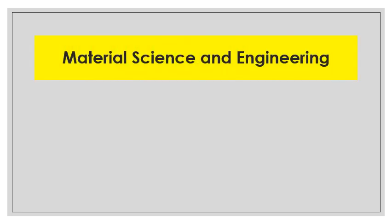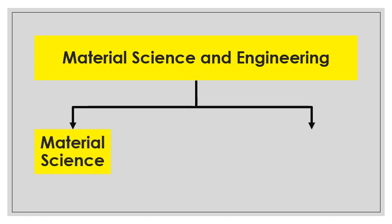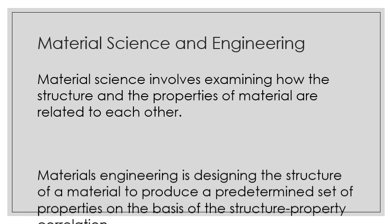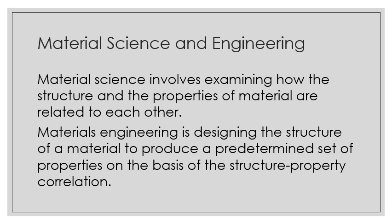Material science and engineering can be divided into two aspects: material science and material engineering. When we say material science, it involves examining how the structure and the properties of a material are related to each other. On the other hand, materials engineering is designing the structure of a material to produce a predetermined set of properties on the basis of the structure-property correlation. Sa material science, pag-aaralan mo lang at oobserbahan mo yung pre-existing materials. Pero sa engineering, ikaw mismo yung magde-design — gagawa ka ng bagong material.